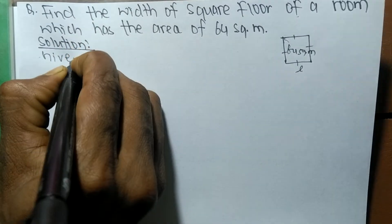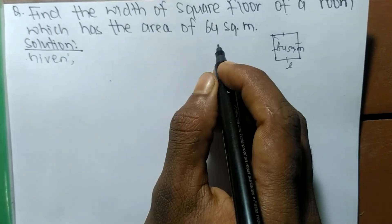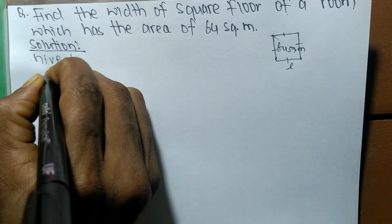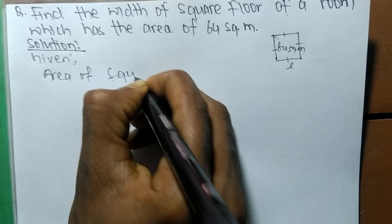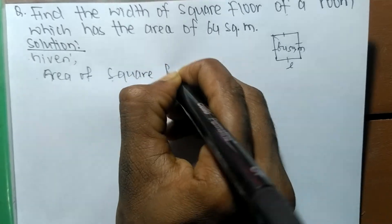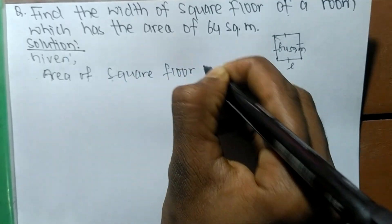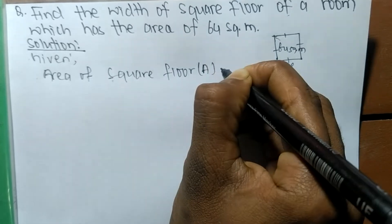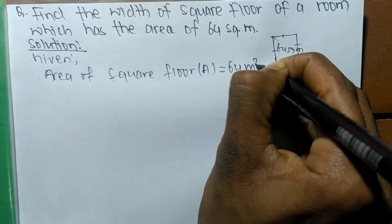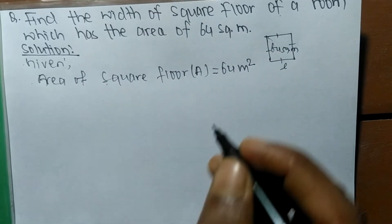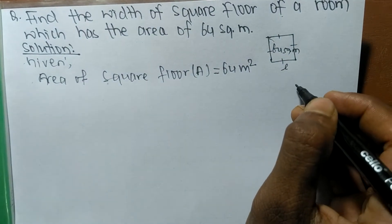First we have to write what is given here. We have given area of a square floor, we denote it by A, is equal to 64 meter square. And we have to find out its width, so we denote width by L.